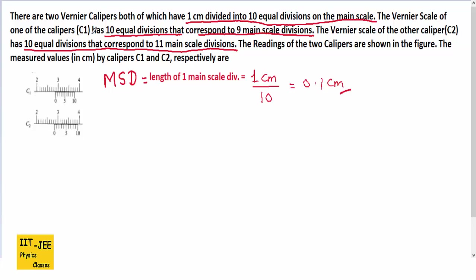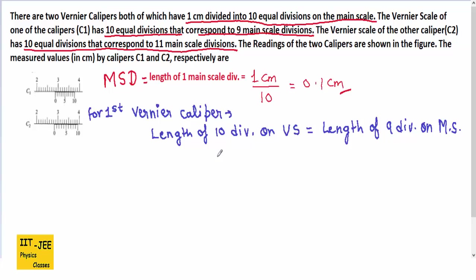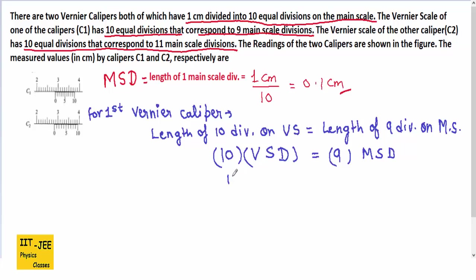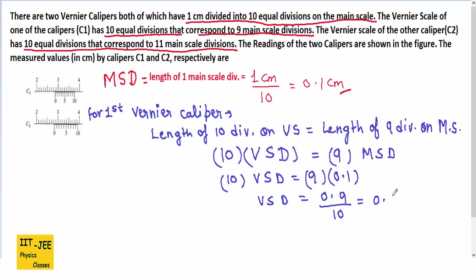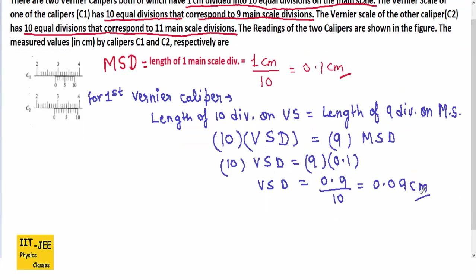Now we will find the VSD of both vernier calipers. The vernier scale of the first caliper has 10 equal divisions corresponding to 9 main scale divisions. So 10 times VSD equals 9 times MSD. Since MSD is 0.1 cm, we get 10 × VSD = 9 × 0.1 cm. So VSD equals 0.9 divided by 10, which is 0.09 cm. This is the VSD of the first vernier caliper.